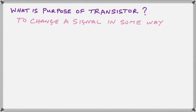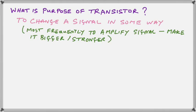To change a signal in some way. Most frequently we want to amplify the signal, make it bigger and stronger, but there are purposes other than this that the transistor is used for as well. But all transistor circuits are going to have an input and an output.